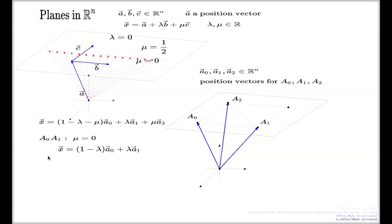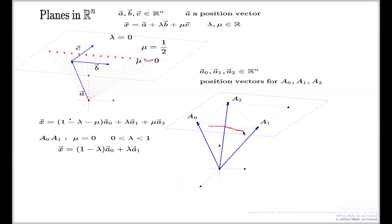If you also add constraints on the second parameter λ — confining it between two values — you get not the entire line but only the segment strictly between a0 and a1, which is exactly the side of triangle a0a1a2. By restricting the freedom of λ and μ you can obtain specific subsets of the plane.